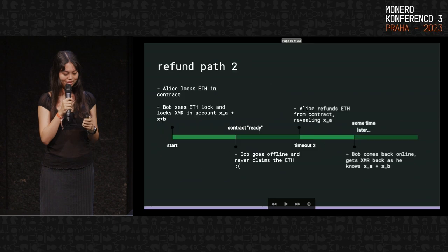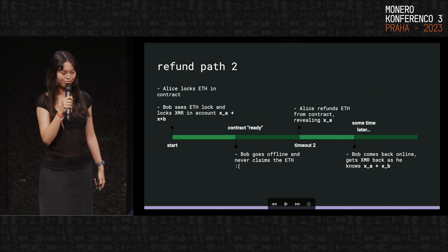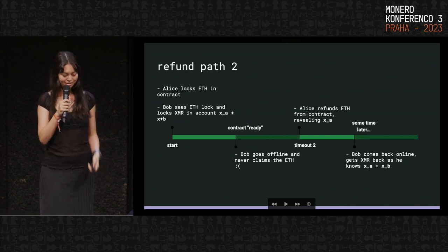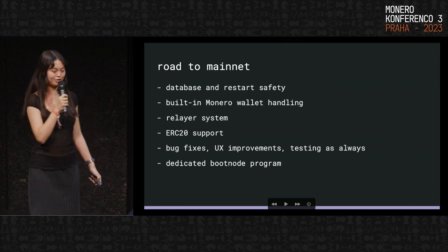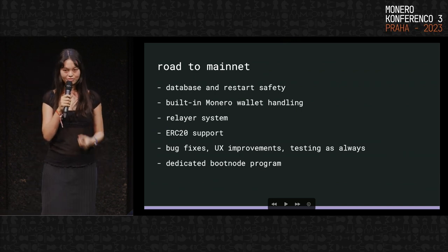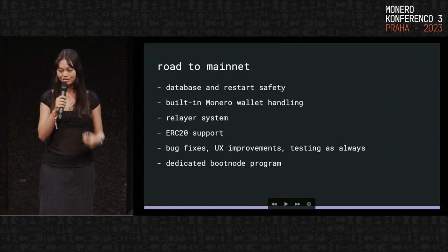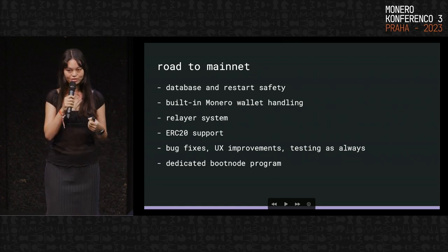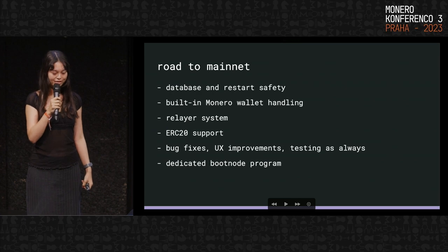That's basically the protocol. There are more docs on this on the GitHub repo. For the road to mainnet: the protocol itself is relatively simple and straightforward to implement, but when you're actually trying to put it into production, there's a lot more to consider. For example, what if someone stops their swap node while in the middle of a swap? How are they going to recover, find out what step they're at, and make sure they don't lose the swap secret?